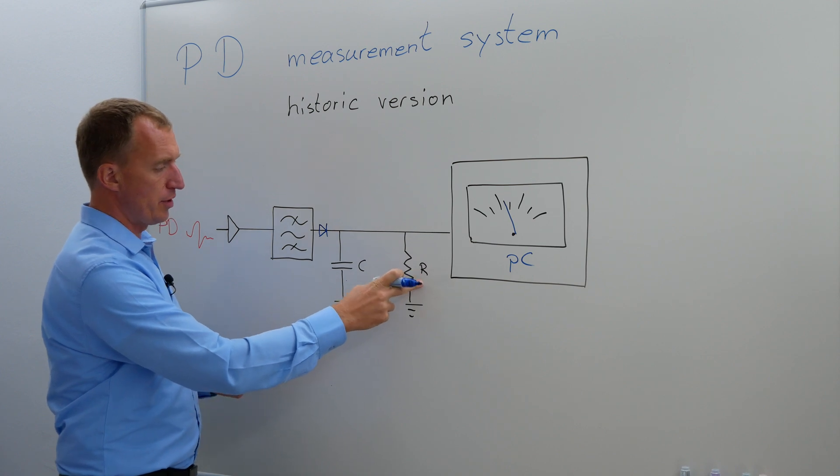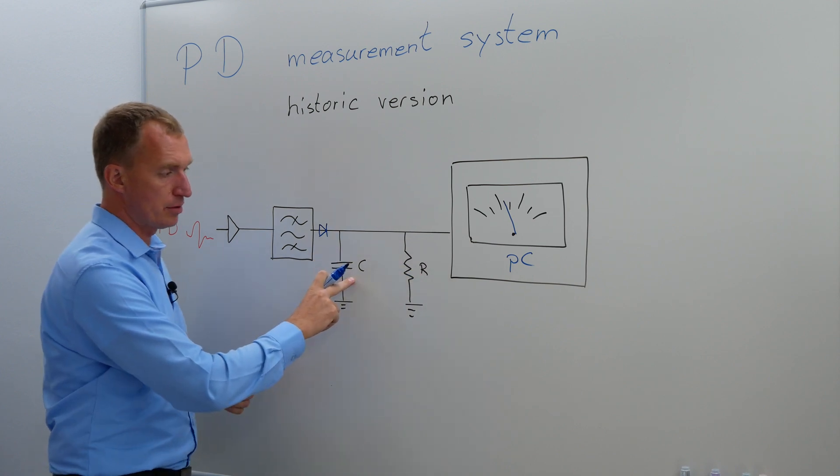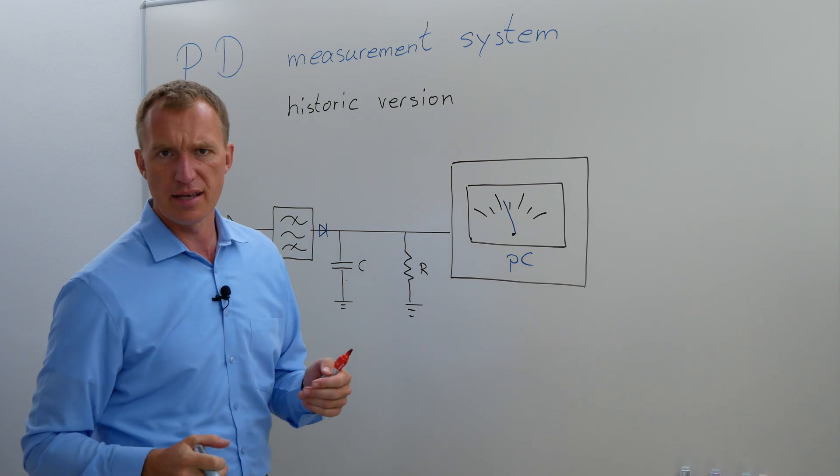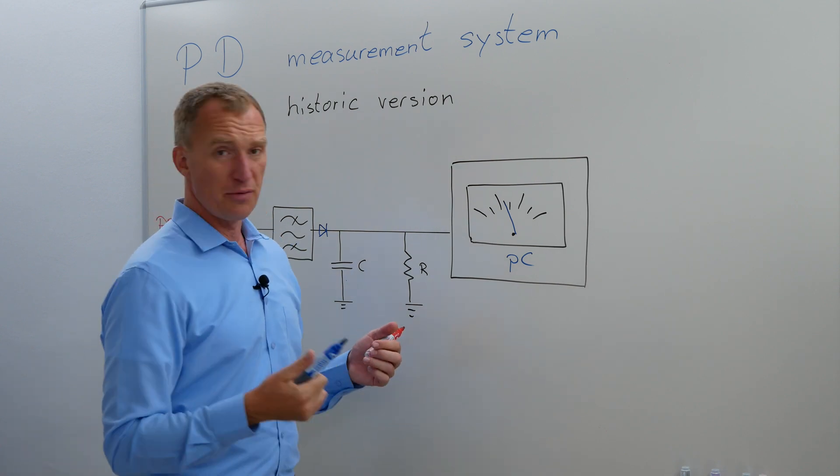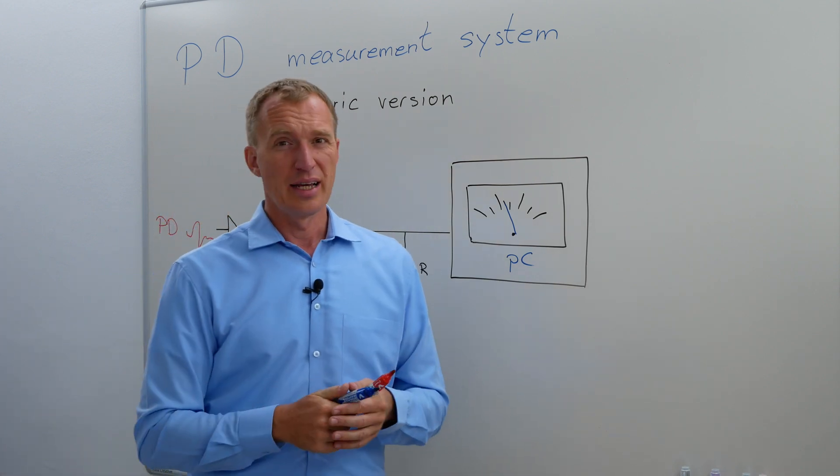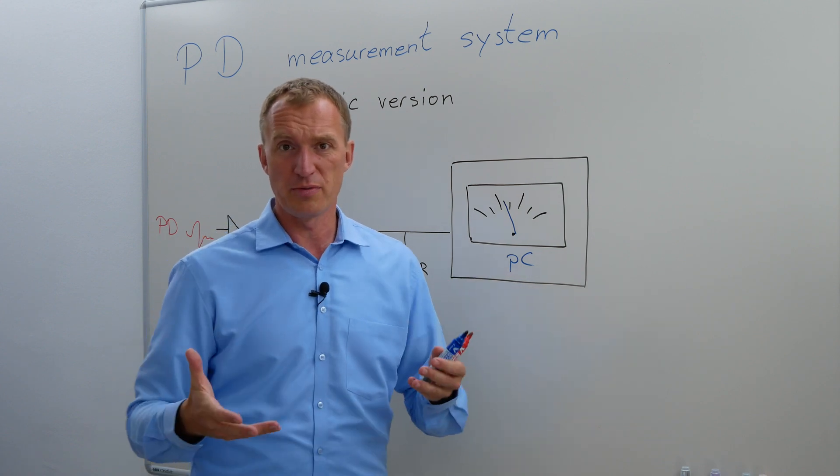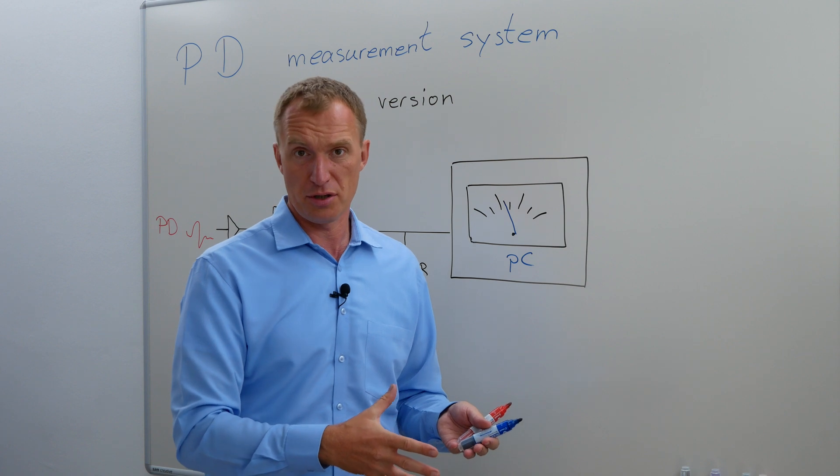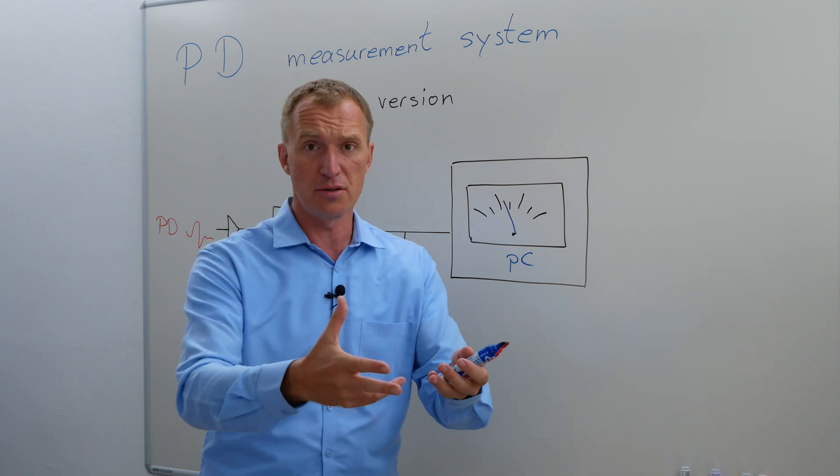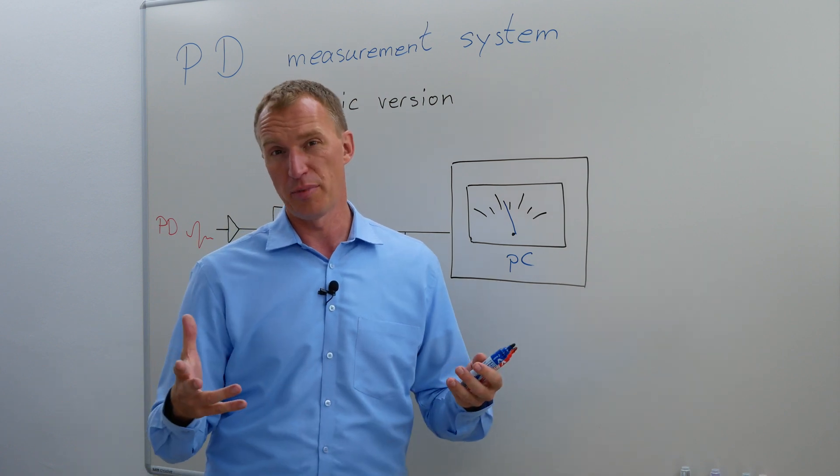The resistor here was there in order to discharge the capacitance, so it was a little bit like a sample and hold. Well that was an idea but the problem was you only got one value and you didn't really know what this value stood for. What kind of partial discharge do you have? Is it noise? Is it external PD, internal PD? So you couldn't do much about that.